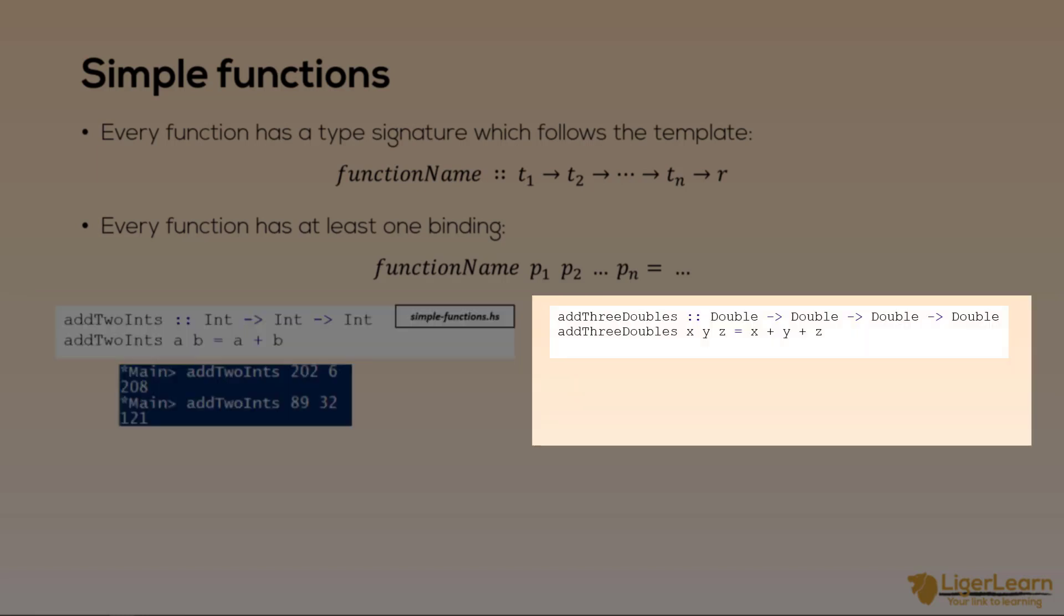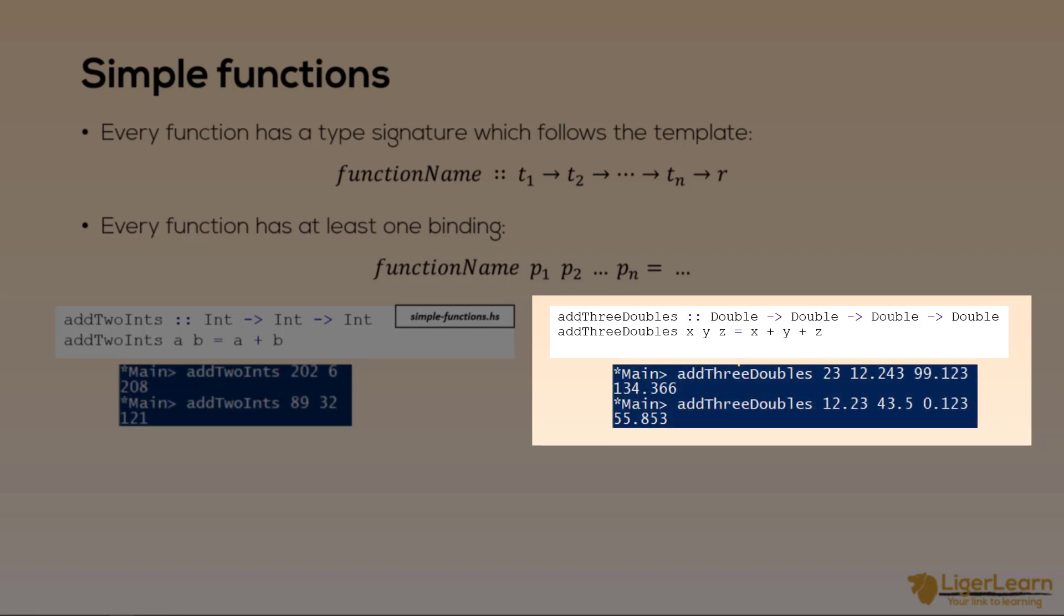Let's take a look at another example. If we look at the type signature first from the type signature we can see that the function is named add three doubles and takes three parameters which are all of type double. It returns a double as well. From this we know that the function binding should have three variables declared. So if we look at the binding we confirm that this is true. There is the function name then three variable names for the parameters next to each other separated by a space between them. Then there is the function body which just sums all of the function parameters. And you can see here that we call the function in the same way passing each argument with the space in between.